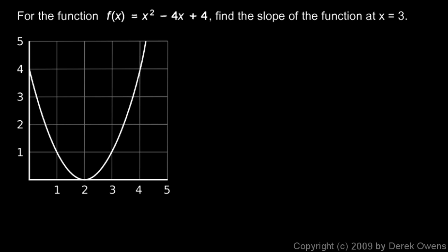In this example, we're given the function f(x) equals x squared minus 4x plus 4, and of course that's a parabola, and it's graphed here, and we're told to find the slope of the function at x equals 3.